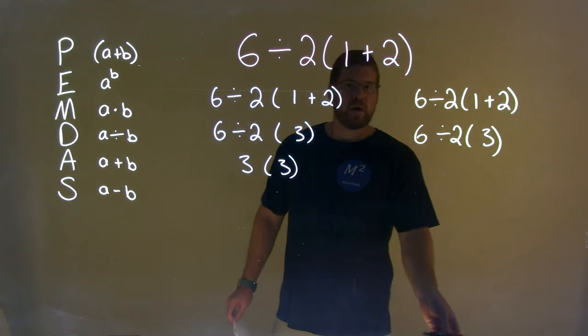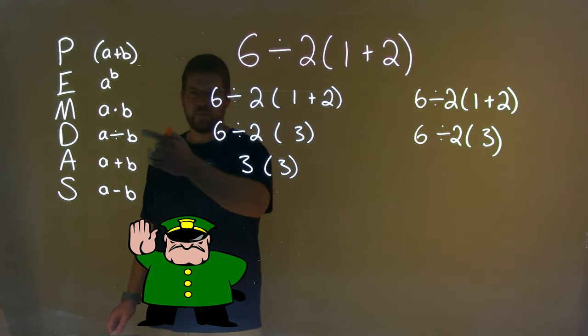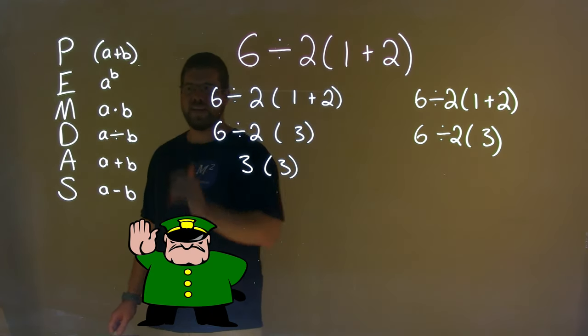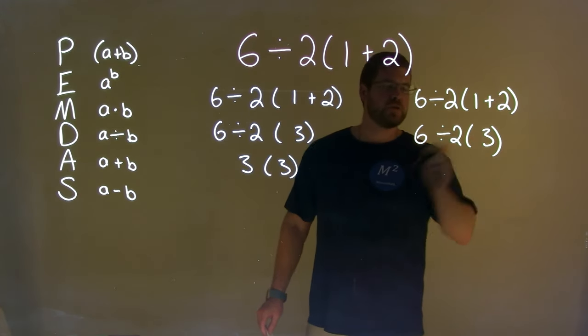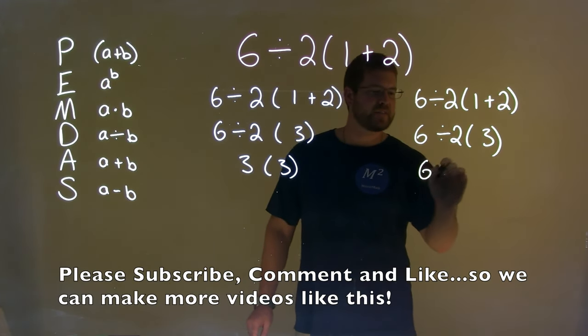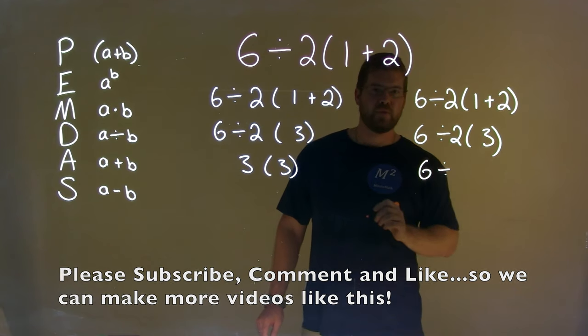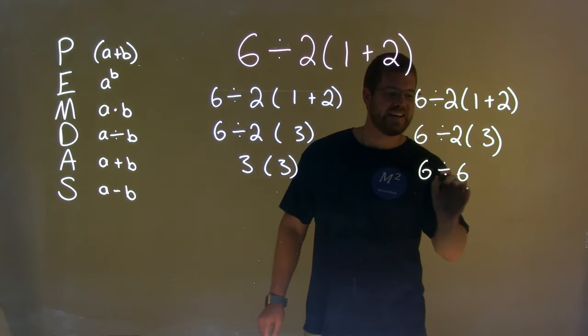The other way, if you follow PEMDAS strictly, where multiplication always comes first, then division, you would say two times three happens first. And so, we have six divided by two times three, which is six again.